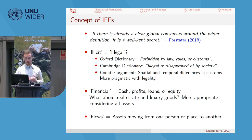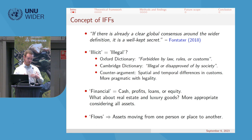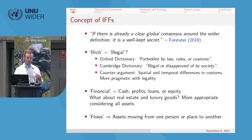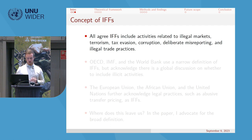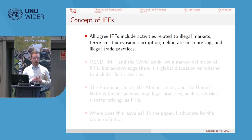The word 'flows' indicates assets moving from one person or place to another. Hidden wealth more broadly can be seen as accumulated illicit financial flows. Everyone agrees that IFFs should include activities related to illegal markets such as terrorism, tax evasion, and corruption.